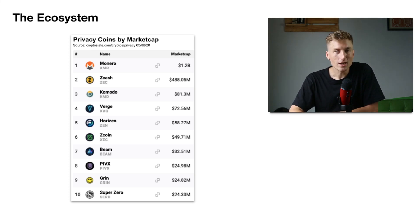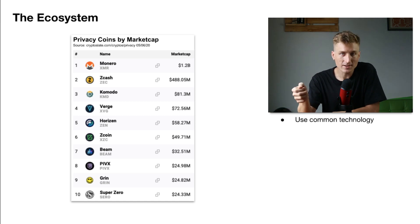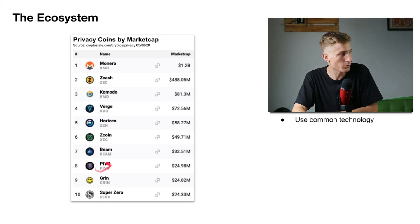The first thing to appreciate here is that all of these use just a handful of underlying technologies. A good example is Dandelion. Dandelion was actually developed for Bitcoin back in 2017 as a way to hide the IP address. Since then, there have been a lot of vulnerabilities found and then new versions of Dandelion and forks of the Dandelion protocol. But basically today, we've got Monero, Zcoin, Beam, PIVX, and Grin all using some version of Dandelion. And it's the same thing with a lot of other technologies.